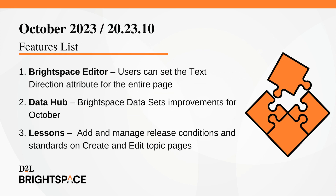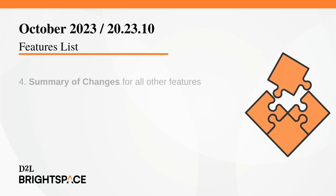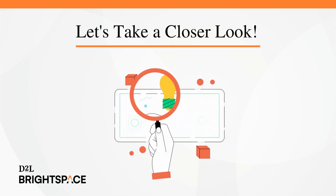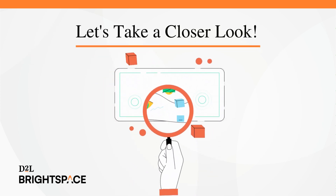This month we're highlighting the following features. In Brightspace Editor, users can now set the directionality for all text on a page when adding attributes. In DataHub, new columns are available in checklist tool datasets as part of BDS improvements for October. In the new content experience or lessons, instructors can now add and manage release conditions and apply standards from the create and edit pages of all activity types. And finally, a summary of changes made for all other features. Let's take a closer look at this month's features.